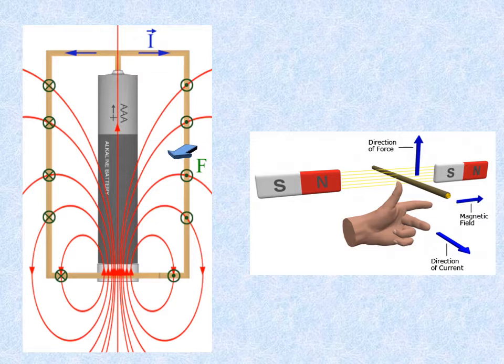This relationship, shown in the diagram to the right, is known as Fleming's left-hand rule and forms the basis of the electric motor.